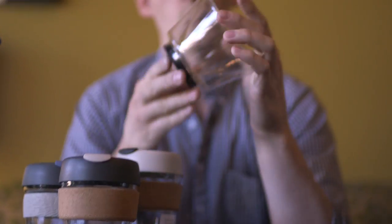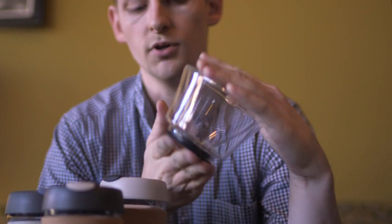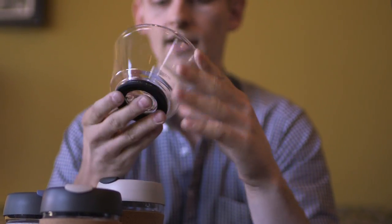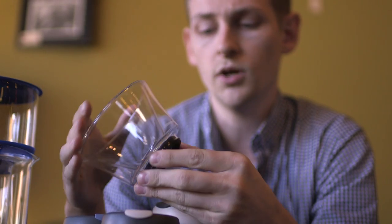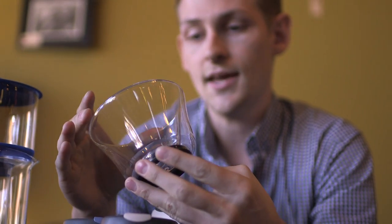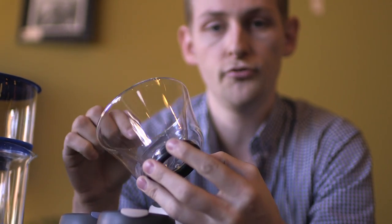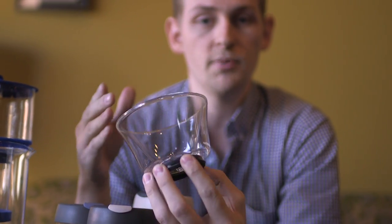Moving right along, we have the Not Neutral Geno Dripper. We've also got the decanters, but I don't have one to show you here today. Now, these are basically pretty much the same as a Kolita Wave 185. It is a sort of ruffled filter, flat bottom cone.